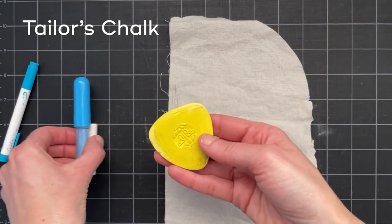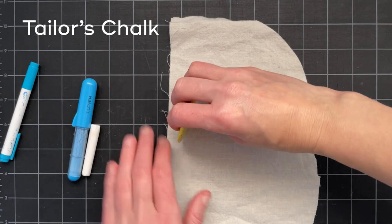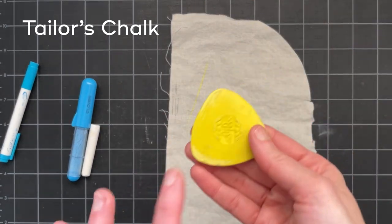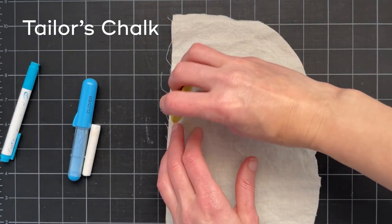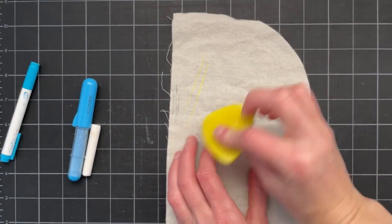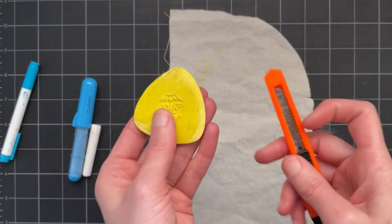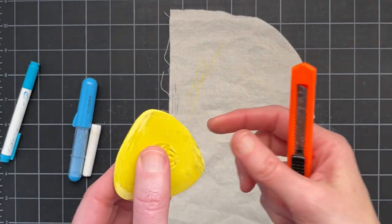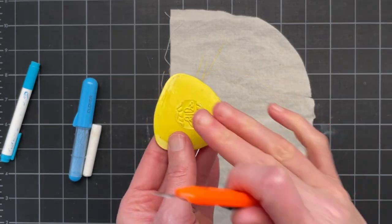Next we have chalk. This is a pretty common dressmaker's chalk and I think it might actually be a combination of chalk and wax because it has kind of a waxy feel to it and you can just use it to draw right on your fabric. If you have one of these you might want to sharpen it to get a thinner line. You can sharpen this piece of chalk by using a blade and just shaving away.